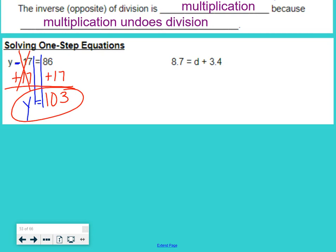Second equation, we have 8.7 equals d plus 3.4. So here's our equal sign. Draw those railroad tracks. That's where we need to keep the balance, both sides of the equal sign. Here's our variable, d. So our goal is to get d all by itself.